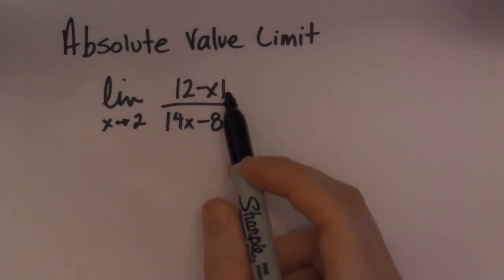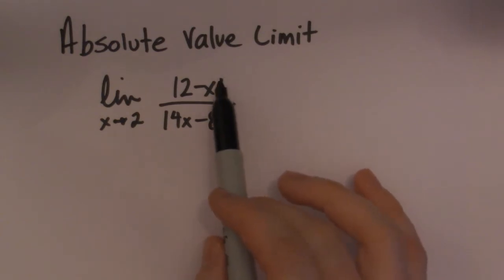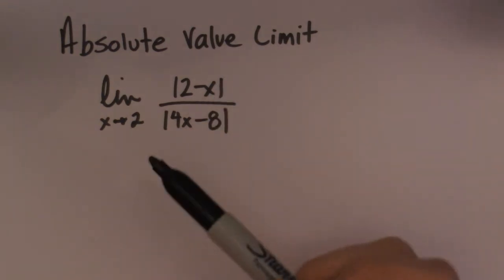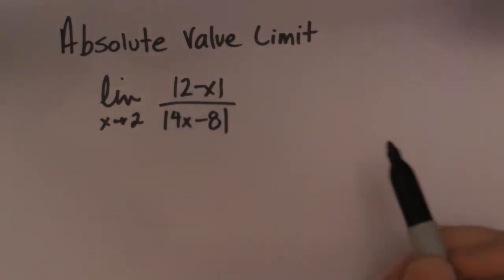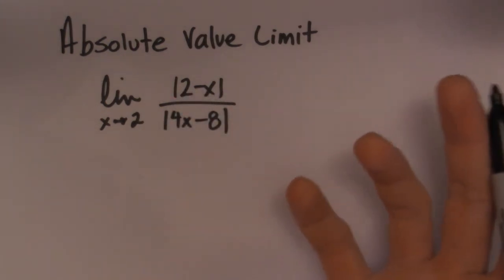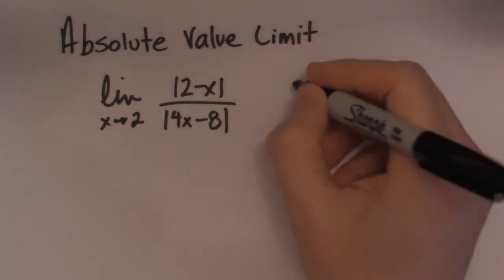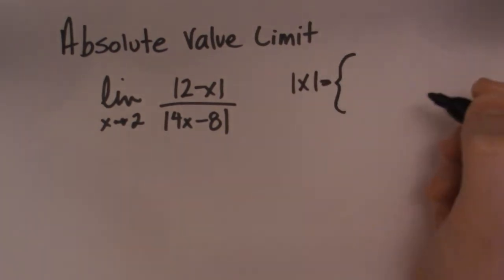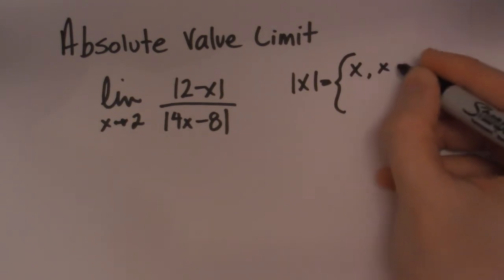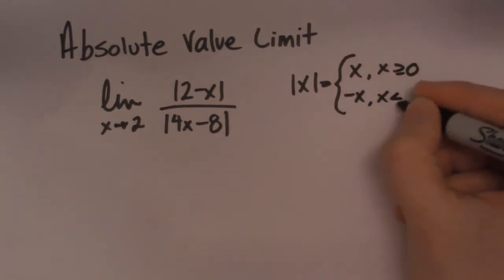This one has two absolute value expressions in a particular limit. So I'm just going to do the one example and let you guys know how to do it. In the previous videos we looked at how you decide what to do with these absolute value limits. Basically, you have a choice with an absolute value — you can choose the plus or the minus, because the piecewise definition of absolute value gives you x for x greater than or equal to zero, or negative x for x less than or equal to zero.